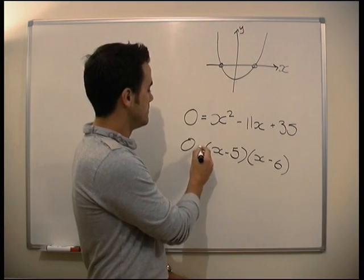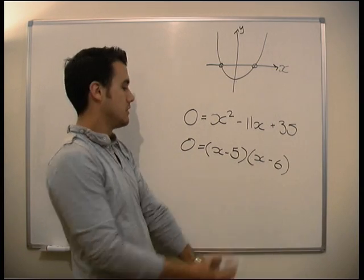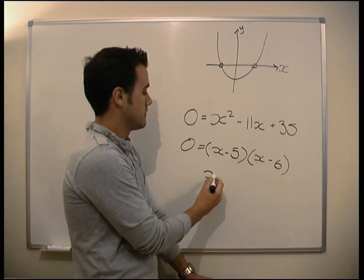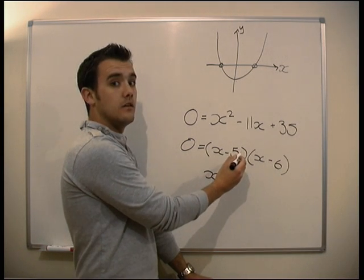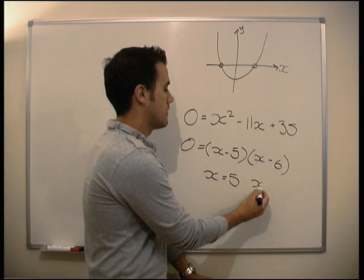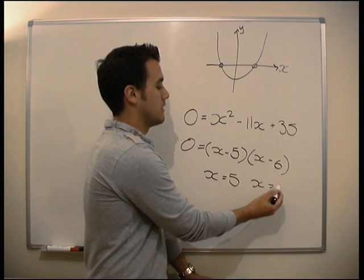We've got to make this whole thing equal zero. How are we going to do that? We're going to make each bracket in turn zero. So x, that would be 5 minus 5, yeah? 5. Or x could be 6.